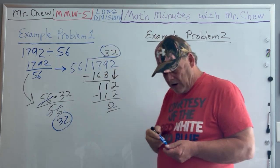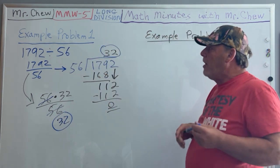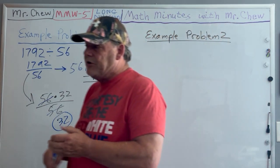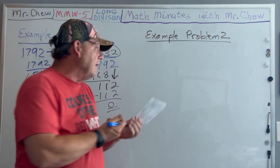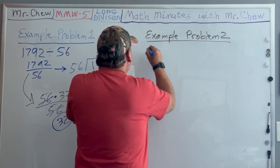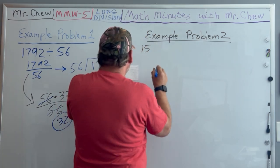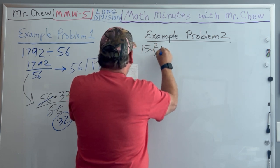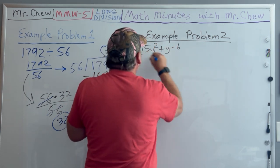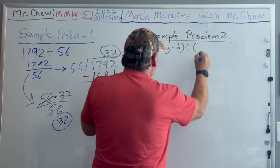That's example problem one using numbers. Now let's go to example problem two using polynomials. If I have the polynomial 15y² + y - 6 and I want to divide that by another polynomial 3y + 2...